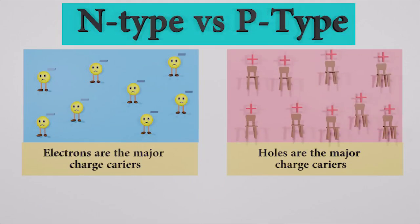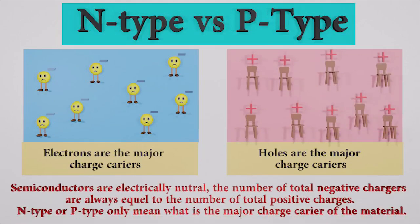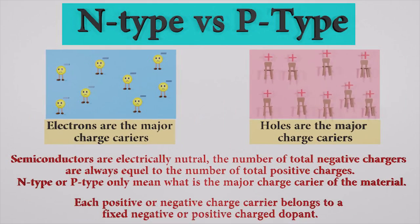Now we know about N-type and P-type semiconductors. But keep in mind that semiconductors are electrically neutral. Remember, the number of total negative charges are always equal to the number of positive charges. N-type or P-type means what are the major charge carriers of the material. Each positive or negative carrier belongs to a fixed negative or positive charge dopant.